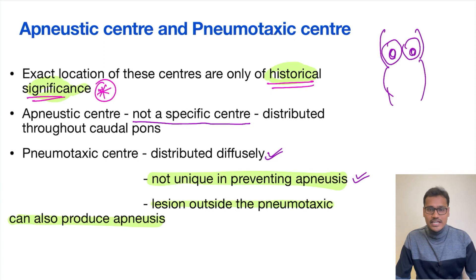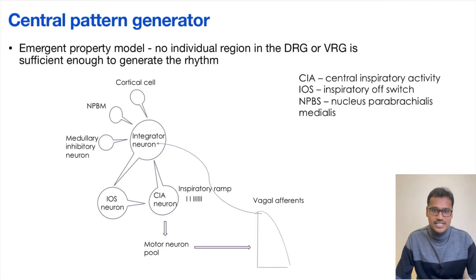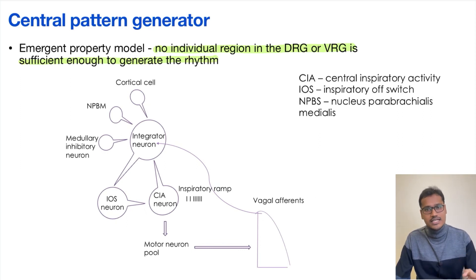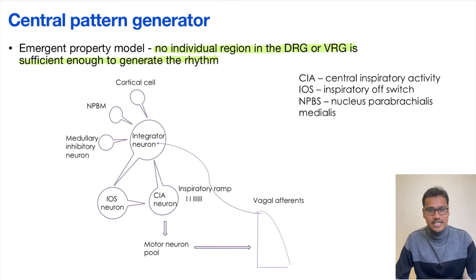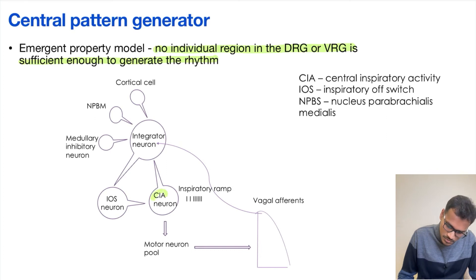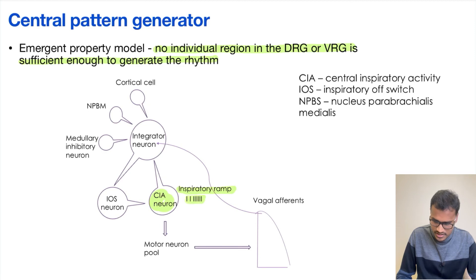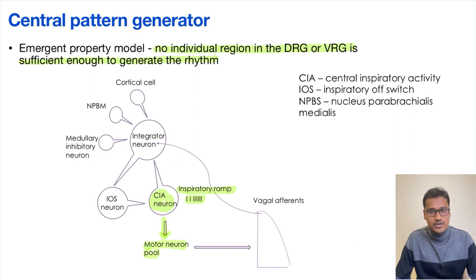With this we study the newer pattern generator — the central pattern generator. This concept arose because no individual region in either the DRG or VRG is sufficient to produce the rhythm seen in humans. So it is a group of neurons involved in inspiratory and expiratory control. One named group is called the central inspiratory activity, which generates the inspiratory ramp that travels to the motor neuron pool, down to the spinal cord, to innervate the muscles of respiration.